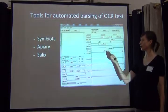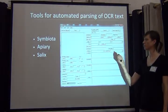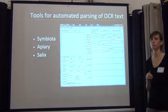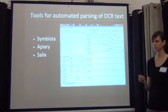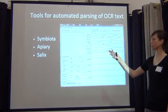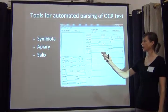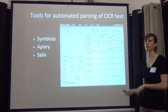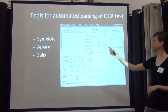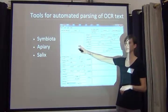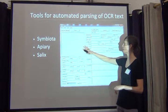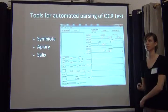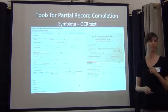We talked about Symbiota briefly yesterday. There's a program called Apiary that is being developed at BRIT, the Botanical Research Institute of Texas, that's doing really great work on this. And this is a screenshot of Salix — Kim's going to demo this later, so I'm not going to go into it right now. But you can import the OCR text into this program and it'll sort of try to parse it for you using natural language processing.